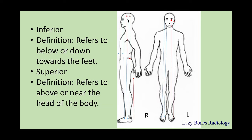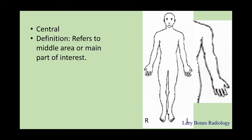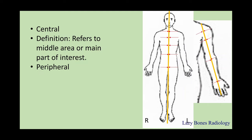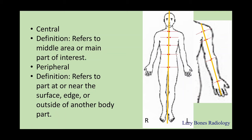Central refers to the middle area or the main part of interest. Here's a line indicating the central part of the body — as you go towards that center, you are more central. If talking about a body part, the closer you are to the main part of interest, the more central you are. Peripheral is the opposite; this refers to the part at or near the surface, edge, or outside of another body part. The arms are more peripheral than the torso, and if you are away from the central part of a body part, you are more peripheral.